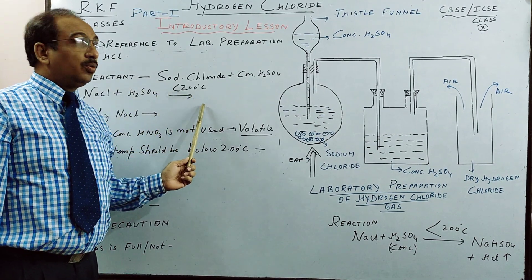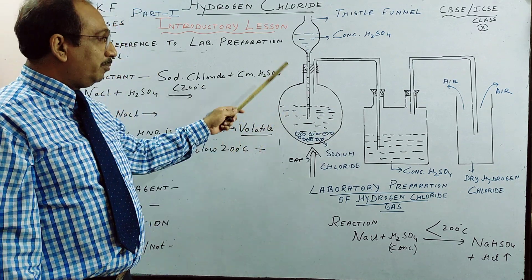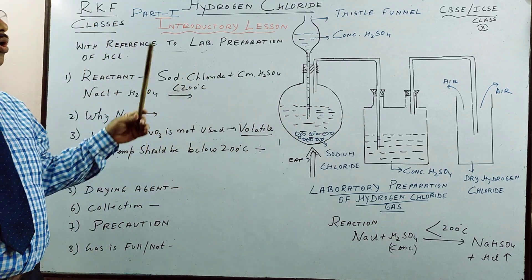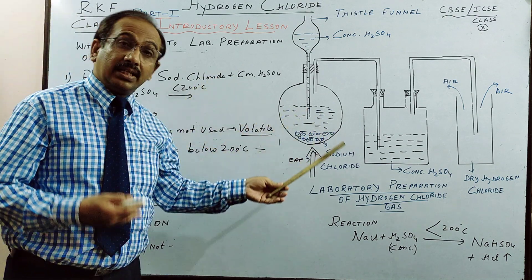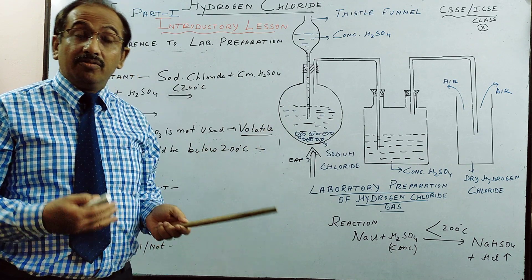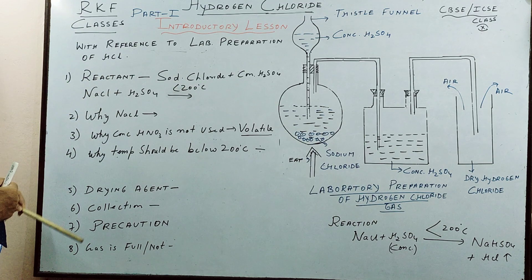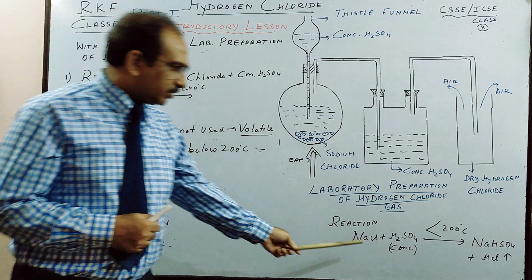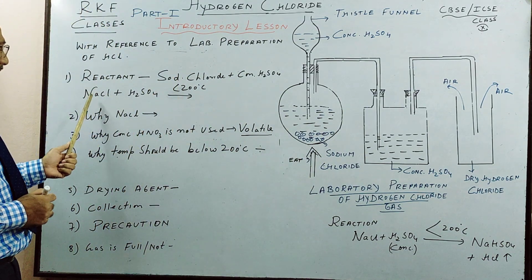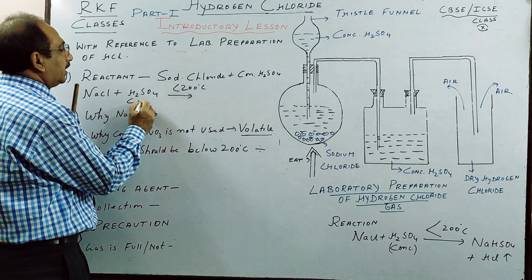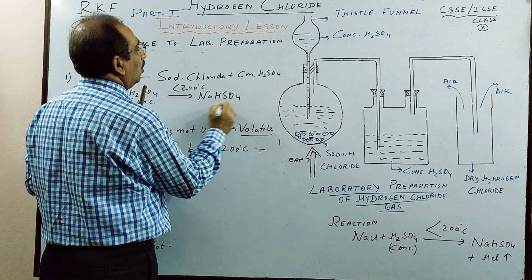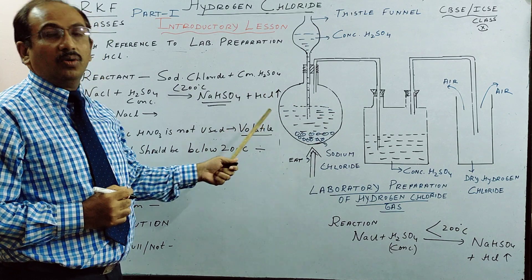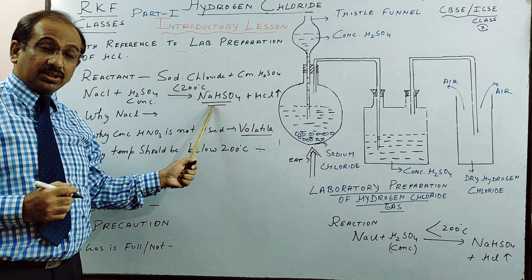Now we study in detail, because if you see your ICSE questions, many 3 to 4 mark questions come with reference to lab preparation of HCl. First point: what are the reactants? We take sodium chloride and concentrated sulphuric acid. Second thing: what is the reaction? Sodium chloride with concentrated H₂SO₄ gives NaHSO₄ (sodium bisulfate) plus HCl gas. This upward arrow means you get a gas. This is the equation, which is very important.